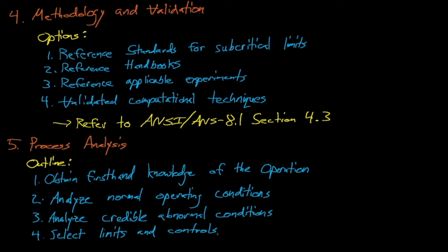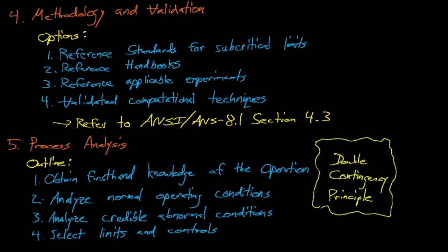Lastly, the standard recommends that our process analysis should require at least two unlikely, independent, and concurrent changes in process conditions before a criticality accident can occur. In other words, our process analysis should adhere to the double contingency principle. As mentioned before, this is a 'should' statement, but it's a very strong should statement.